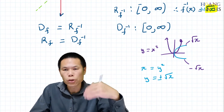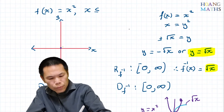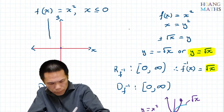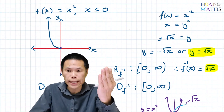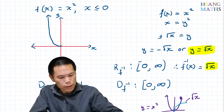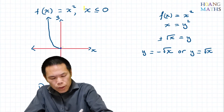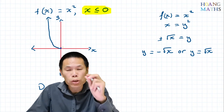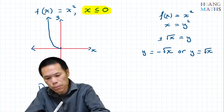Now let's change the domain of the function. Let's change the domain to x less than or equal to zero. This means the graph is restricted to only the left-hand side. The domain of the function is less than or equal to zero, so the range of the inverse function must also be less than or equal to zero.